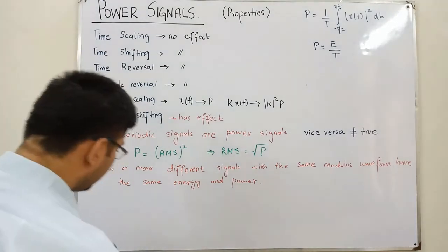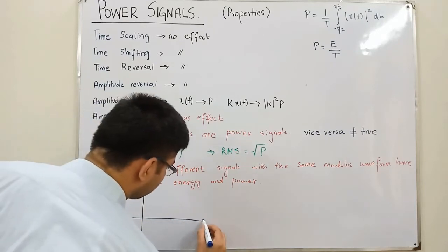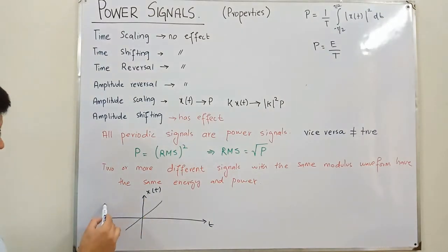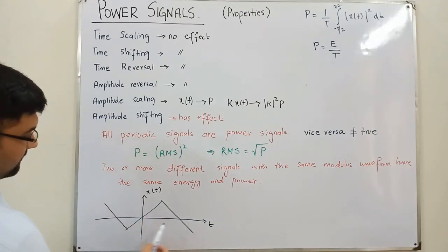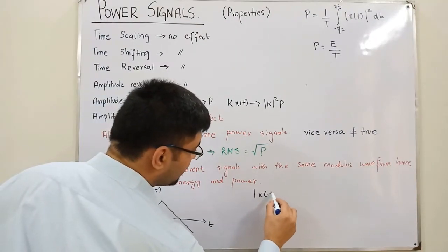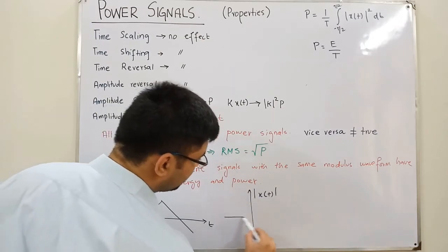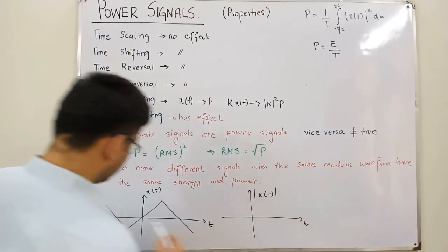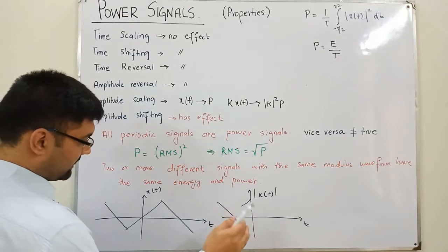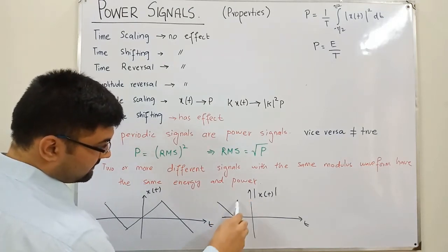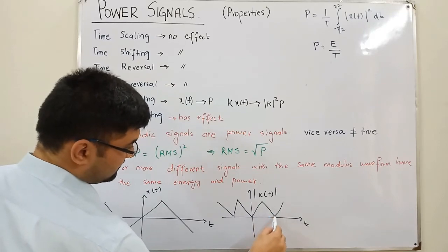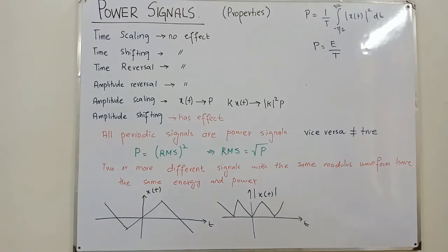Let me show you how this works. Say I have a function x(t) with this sort of waveform — it has positive and negative portions and repeats in this way. Now if you find the modulus |x(t)|, the negative portions flip to positive. So the positive portions stay as they are, and the negative portions become positive — giving a modified waveform.